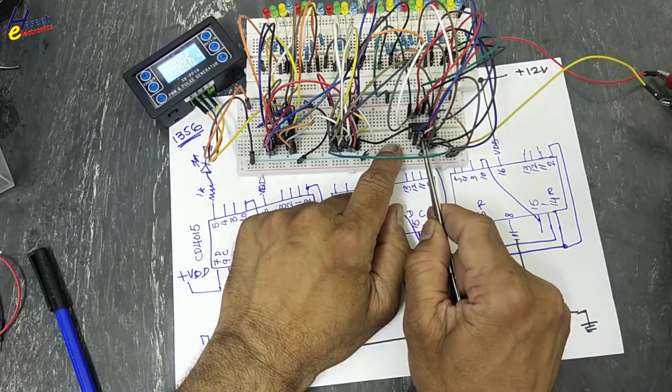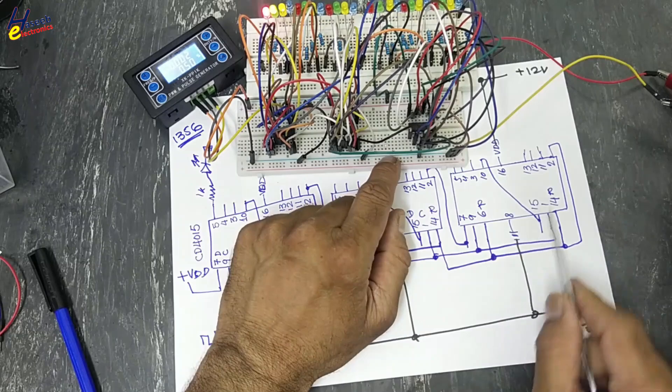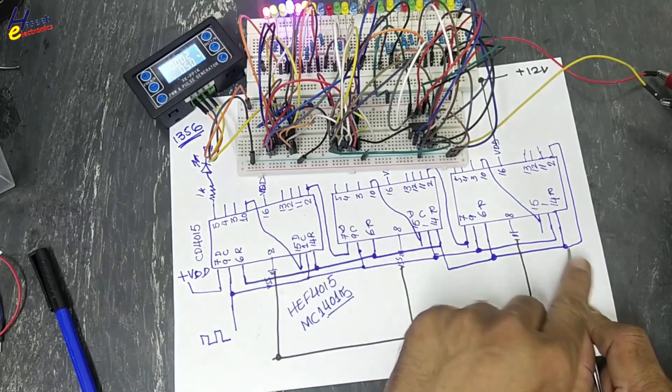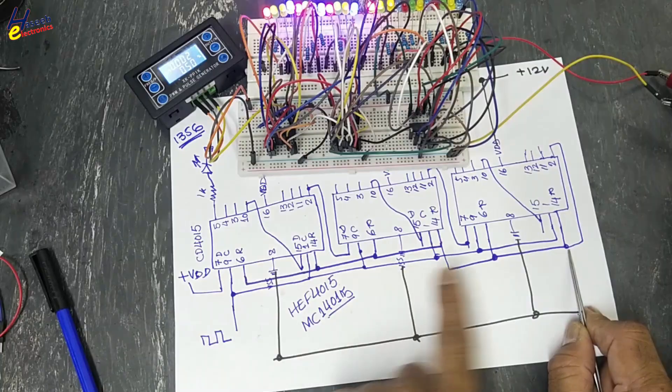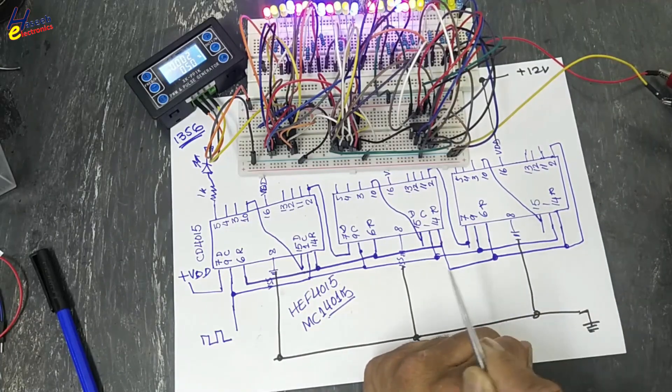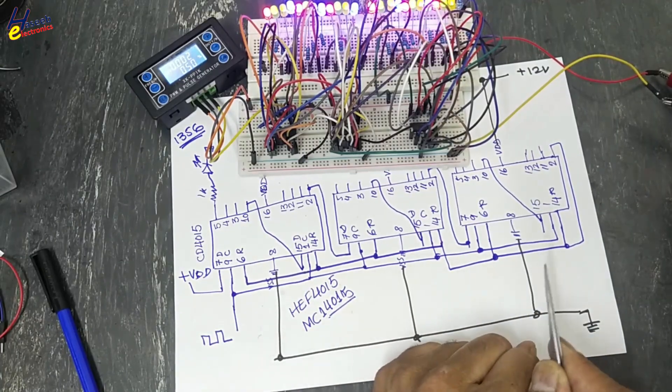We will remove it and we will connect directly to ground. Now pin number 6, 14, 14, 6, 14, 6 will be connected to ground. Return VSS.